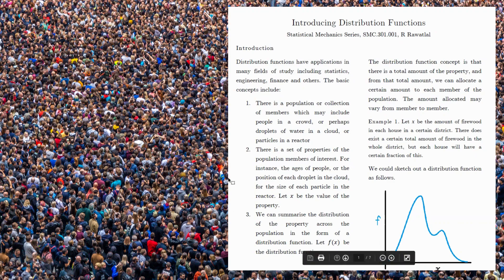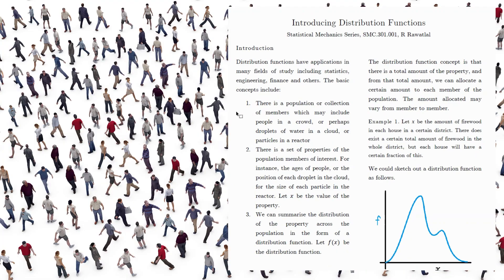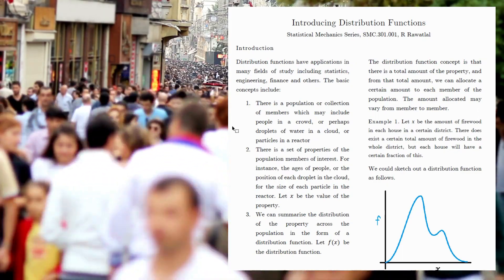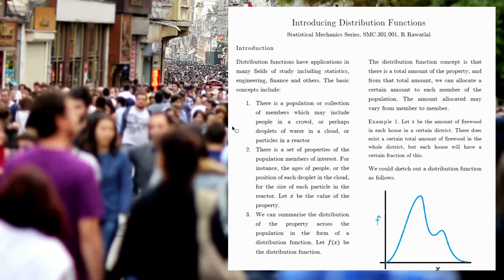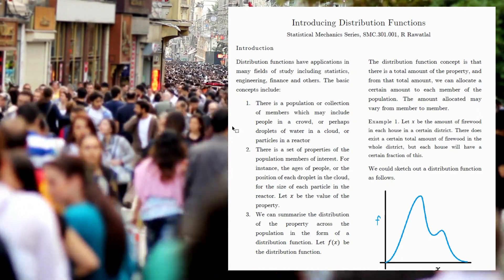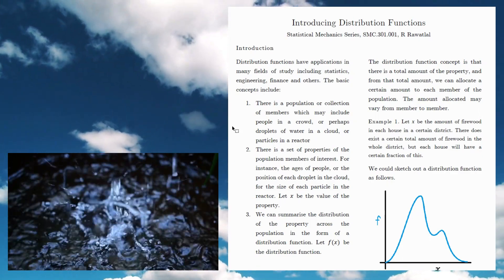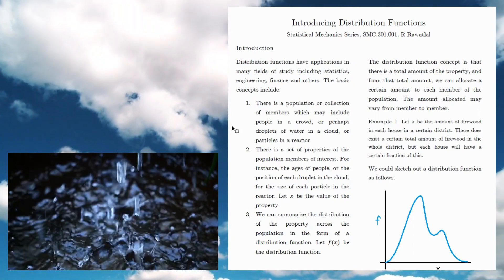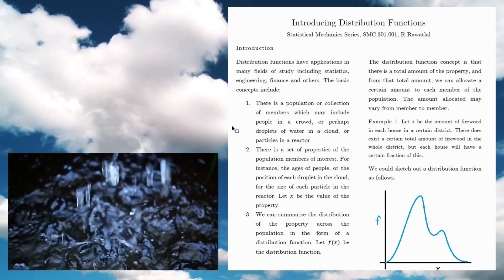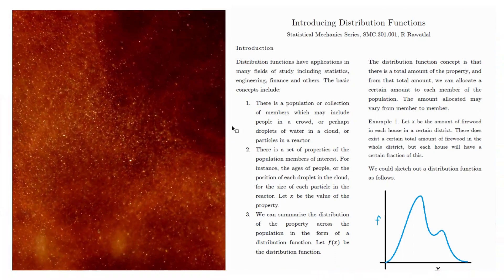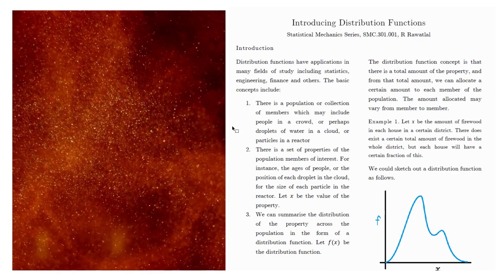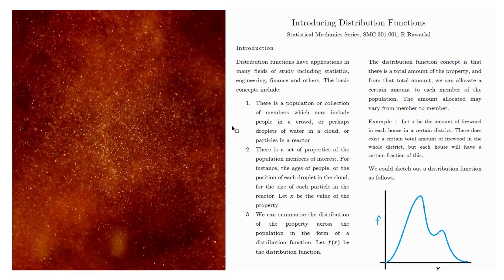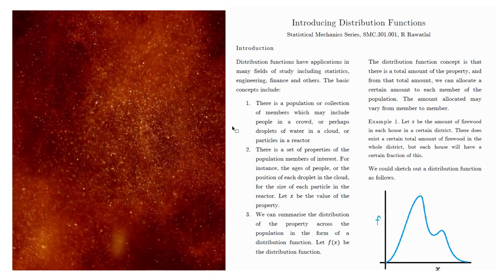Here are some of the core concepts we need to make progress with distribution functions. First, we have a population, or some collection of elements — population members. By default, we think of human populations, like people in a crowd. Or we can think of droplets of water in a cloud, where the cloud is the population and the droplets are the members. Or if we have a reactor, the particles in the reactor are the population and each particle is a member.